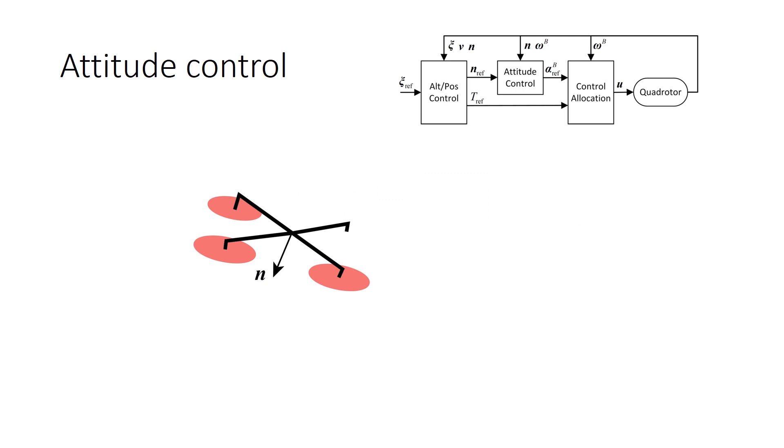The attitude control loop makes use of the desired thrust direction and reference to calculate the reference angular acceleration on the n rotation, which is perpendicular to both n and n reference.